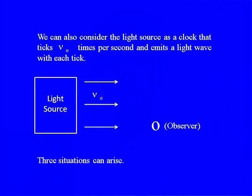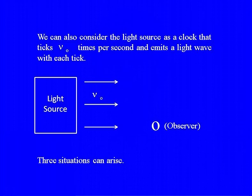For propagation of light, you do not need a material medium — it can propagate through vacuum. But for sound, of course, you need a material medium. So we consider a light source emitting light of frequency nu-0 and then we have an observer. We can also consider this light source as a clock that is ticking — at each tick it is emitting a light wave. It is ticking nu-0 times per second. We put these clocks here because it allows us to use time dilation and apply all the principles of relativity learned earlier.